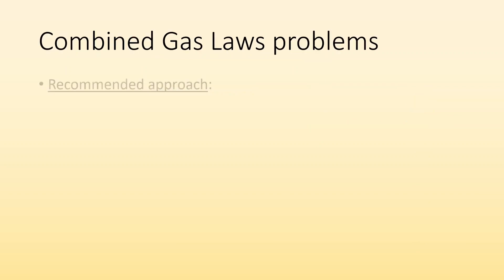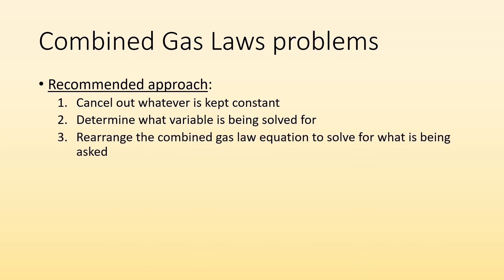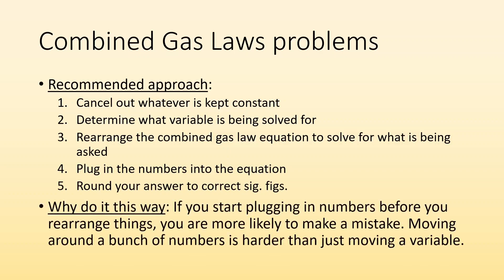Recommended approach for solving combined gas law problems: first, cancel out whatever is kept constant. Next, determine what variable you're solving for. Then rearrange the equation to isolate that variable. Finally, plug in the numbers, round to correct sig figs, and you have your answer. Rearranging before plugging in numbers reduces mistakes — moving variables is much easier than moving ugly numbers.